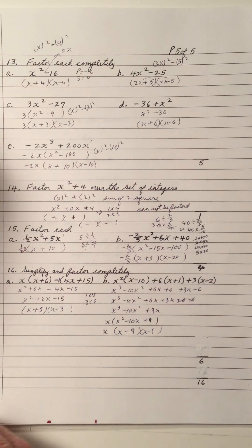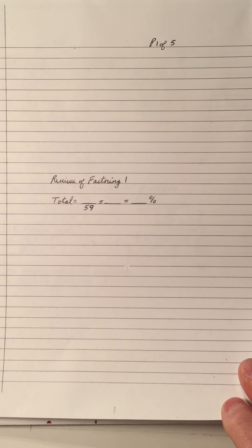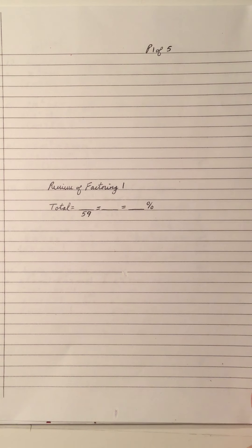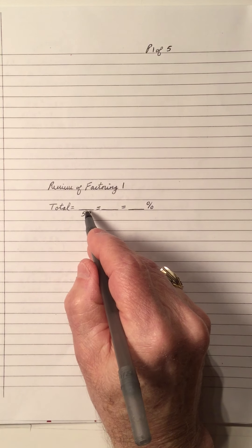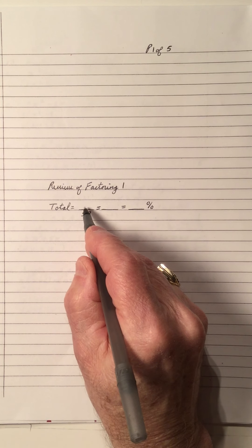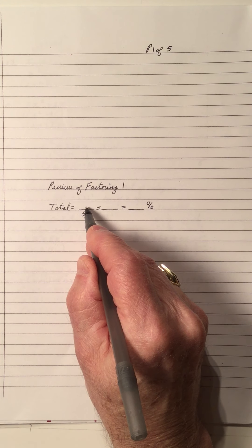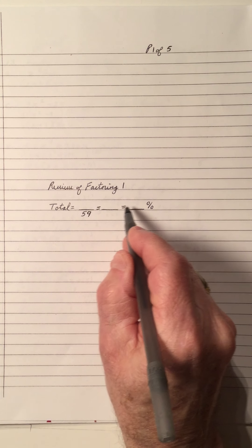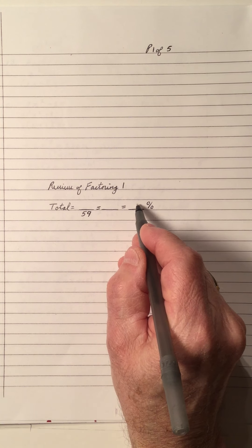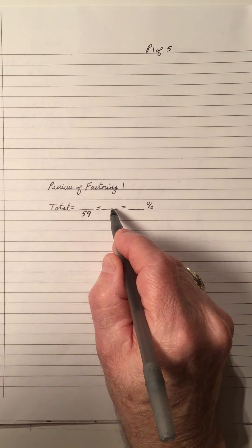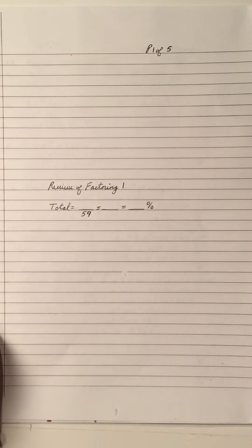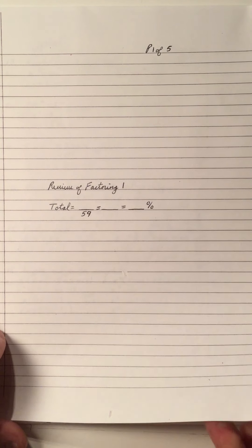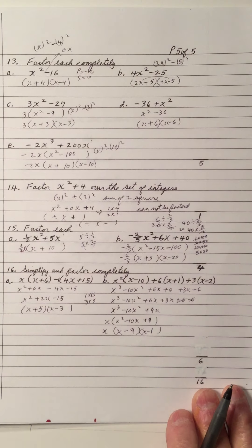Tote the page up to get a mark out of 16. That's the end of the review. When you're done, add up all the numbers at the bottom of each page, put the number over 59, divide 59 into the numerator with a calculator, get a decimal, move the decimal two places to the right, and you get your percent — multiply the decimal by 100. How well did you do? Hopefully you did okay.